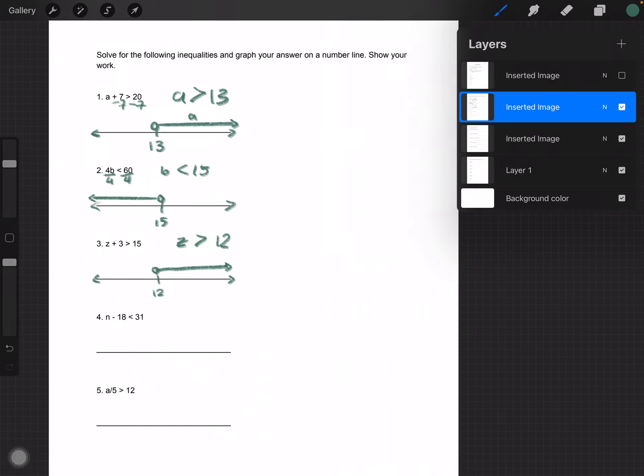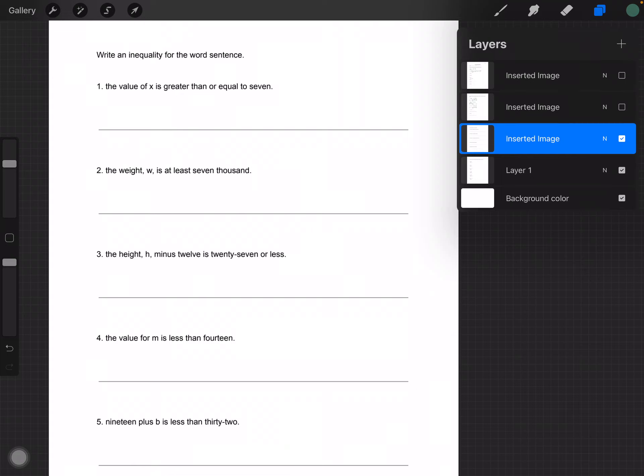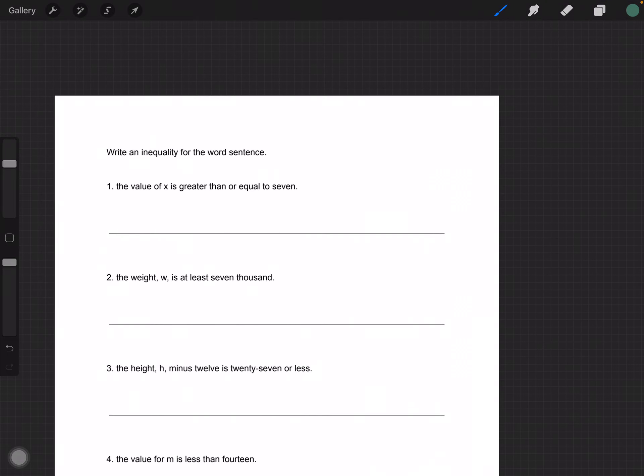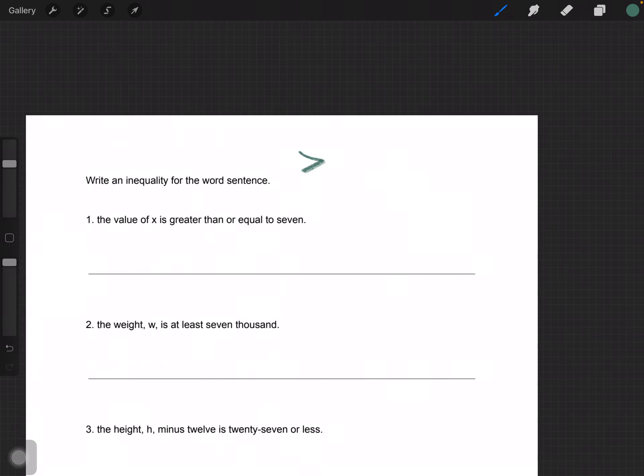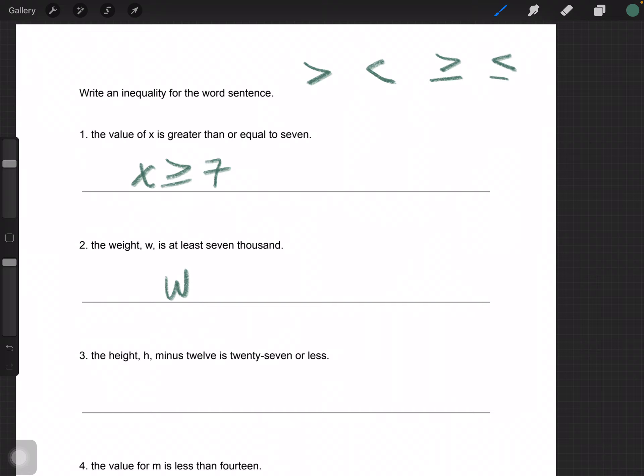Okay, so we're on to the word problems. It is telling us to write an inequality for the word sentence, which is pretty straightforward and easy, but you have to notice the greater than, less than, greater than or equal to, less than or equal to signs. So, the value of X is greater than or equal to 7. The weight W is at least 7,000. So at least means that it could be 7,000, but it also is greater than it. So at the very least, it's 7,000. So it would be greater than or equal to 7,000.